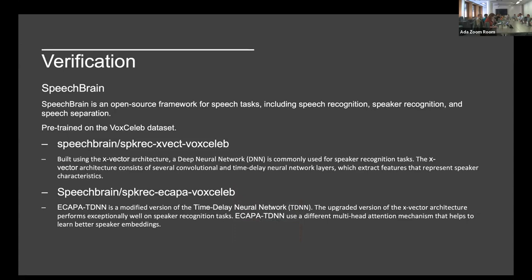SpeechBrain has two models available. The first is called the x-vector model, which uses a deep neural network with time delay neural networks for this task. My understanding is that before there was a d-vector approach taking snippet by snippet, and the x-vector was the next stage — using a sliding window of audio samples, taking the mean and standard deviation to generate the embeddings. The second, which is technically the current state of the art, is ECAPA, which also uses a time delay neural network but incorporates a multi-headed attention mechanism — roughly, it uses transformer-like components within the delayed neural network so it learns better from the embeddings throughout the network rather than just at the end.